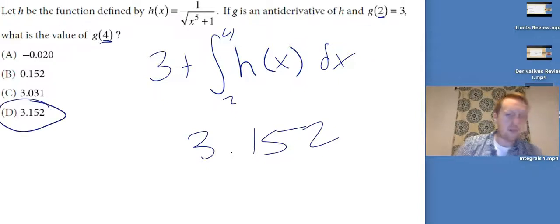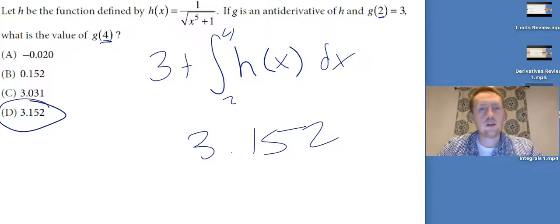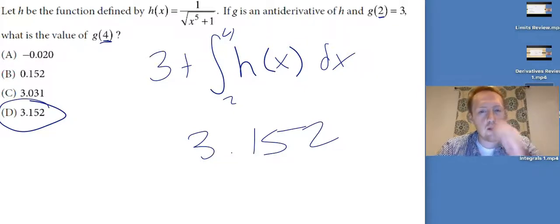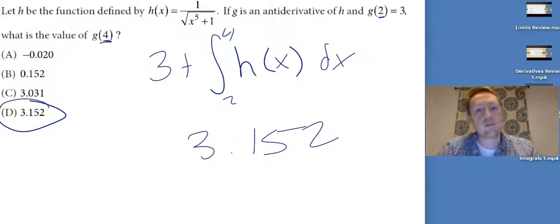If I look at the answer choices right now, I've got a pretty good hunch that it's D, just because they're 3 apart. And in fact, when you go into the calculator and do this integral and add 3, you get 3.152. You can sometimes get the answer just by recognizing the choices are the initial value apart. But knowing how to do the calculus is always better.